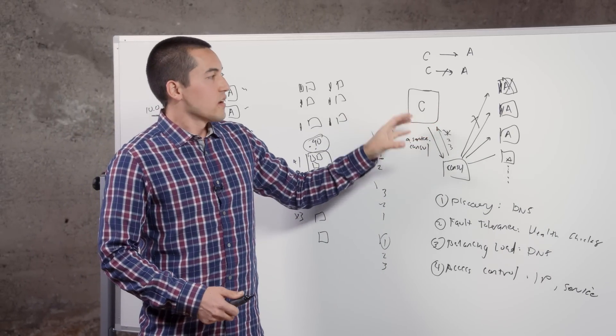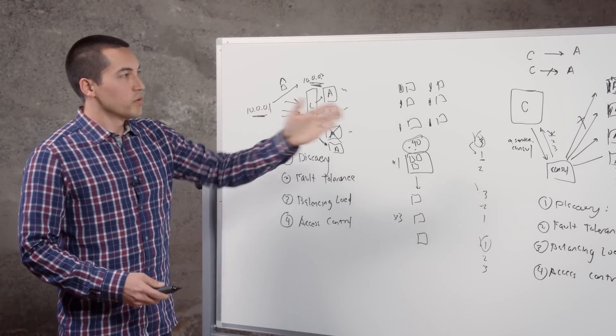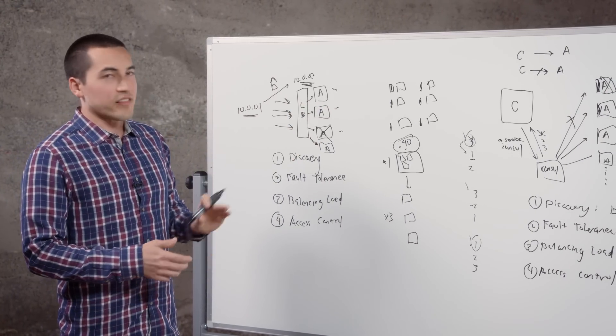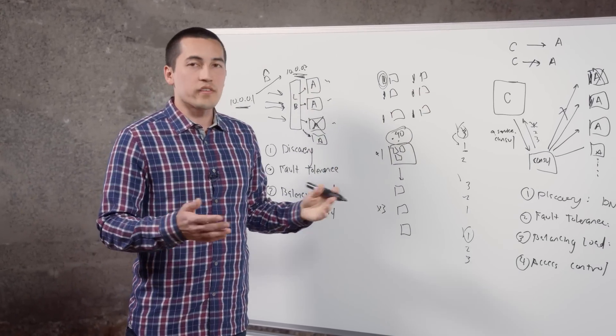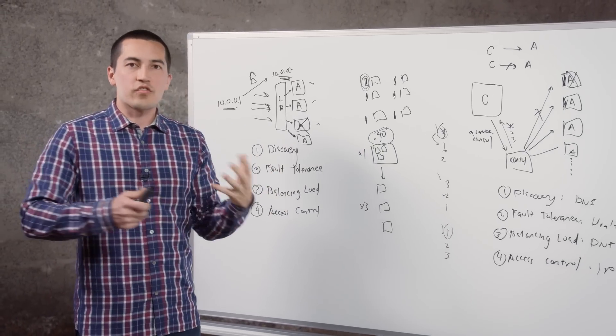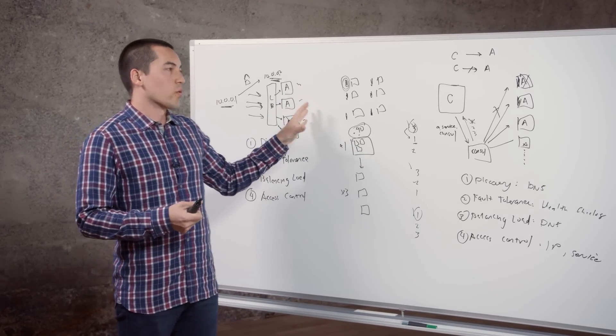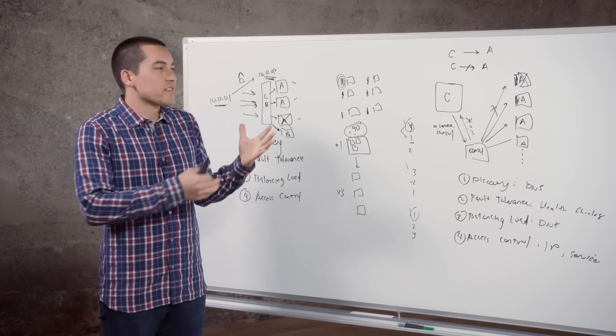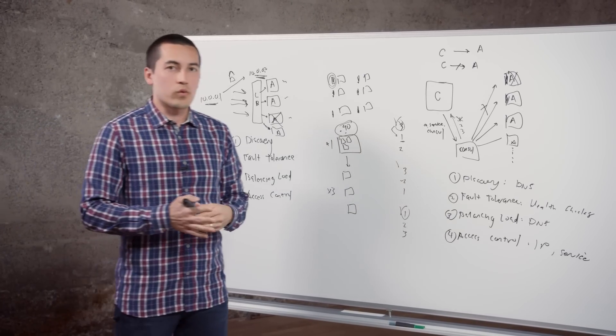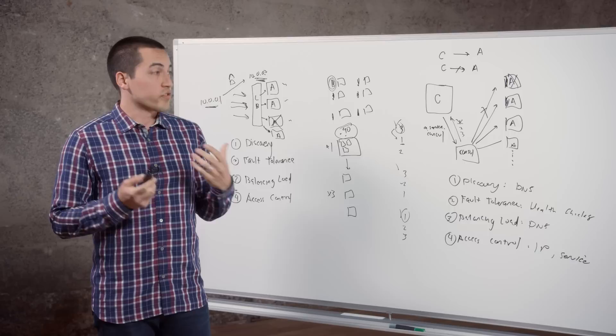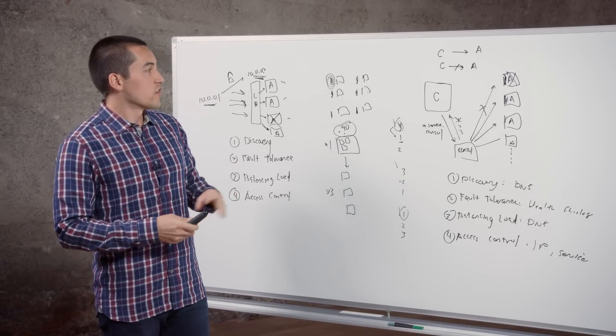You could see how using Consul and using DNS can solve all the same challenges that load balancers were used for. But when you do it this way, you eliminate at least one piece of hardware and software for every single cluster of services. In a more traditional or previous generation environment, you might only have four or five or six services and so it's not that much being replaced. But in a modern microservice cloud-oriented world, you probably have an order of magnitude or more services, and so the costs and the complexity begin adding up.